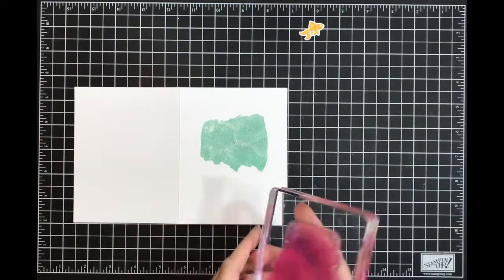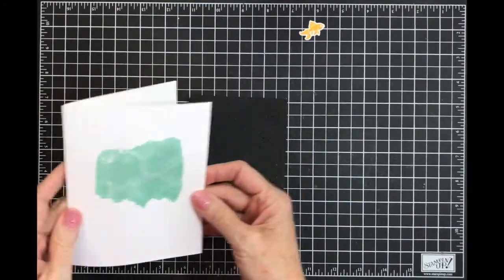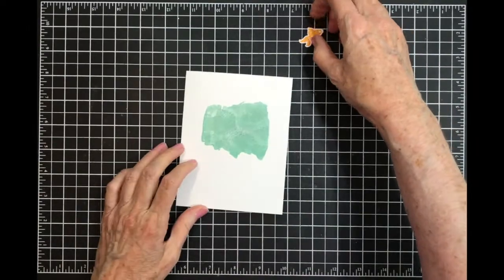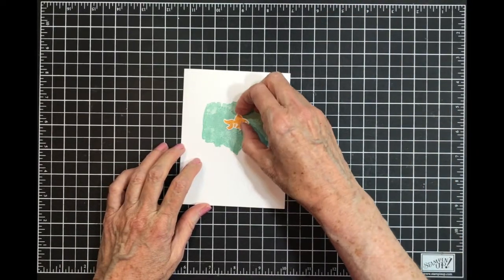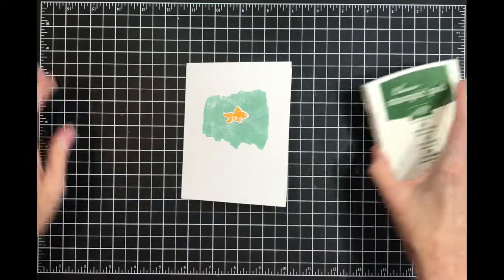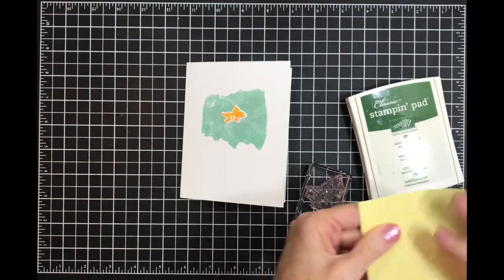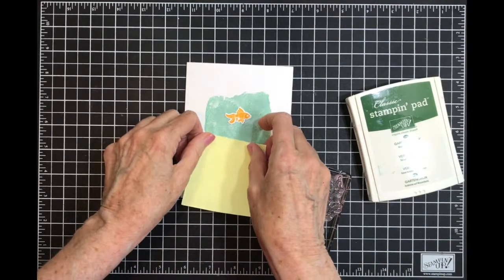Now I've got water for my fish. I'm going to put my little fish there, but now I want to add some seaweed. I don't want the seaweed to go below the water, so I'm going to put this Post-it note there as a mask.